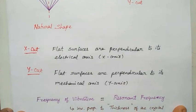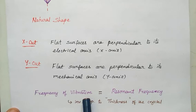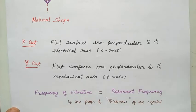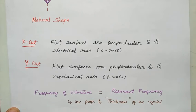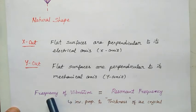Now we see the description of X-cut and Y-cut. The frequency of vibration is equal to the resonant frequency, and this resonant frequency depends on the frequency of vibration. This vibration frequency is inversely proportional to the thickness of the crystal. If the thickness is more, the frequency of vibration will be less, giving a lesser resonant frequency. If the thickness is less, we have a greater frequency of vibration and a higher resonant frequency.